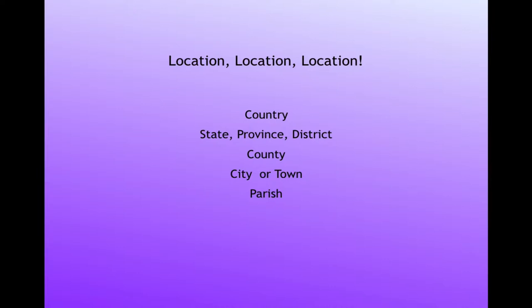Records about people's lives are made by governments, churches, or other associations, and governments are organized by location. So genealogy records are organized by location, and advice about how to do genealogy is organized by location. Within the Wiki, some records are created by countries, some by the state, province, or district, some by local counties, some by a city or town, and sometimes a jurisdiction even smaller than the town, such as a church parish, if the town is divided into several parishes. Any of these can create genealogy records, so you will want to check every jurisdiction that covers the place where your ancestors lived.